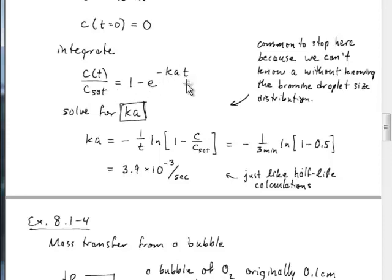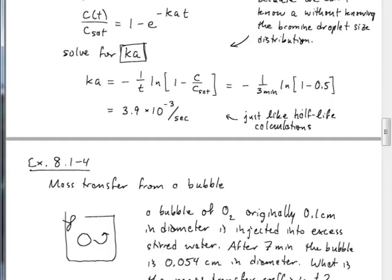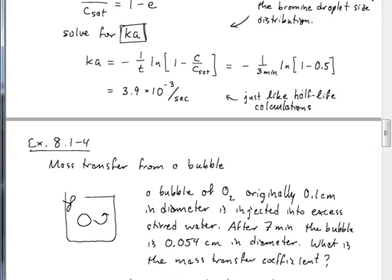Now time is the relevant variable rather than position down the bed — we have a non-steady-state problem. We don't know the bromine droplet size distribution, so we can't compute parameter A independently. Parameter A is the interfacial area per unit volume of the emulsion, and it's unknown. So we solve for the combined parameter KA using the initial and final data. Solving for KA gives minus one over t times log(1 minus fractional approach to equilibrium). Plugging in numbers, we get 3.9 × 10⁻³ per second. That's mass transfer between liquid and liquid.